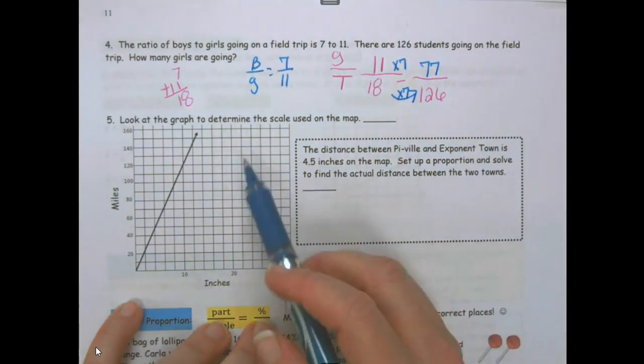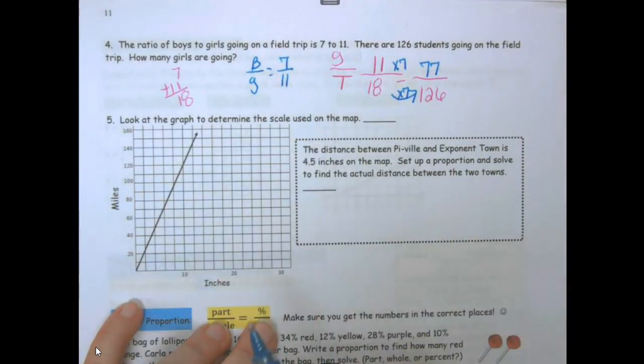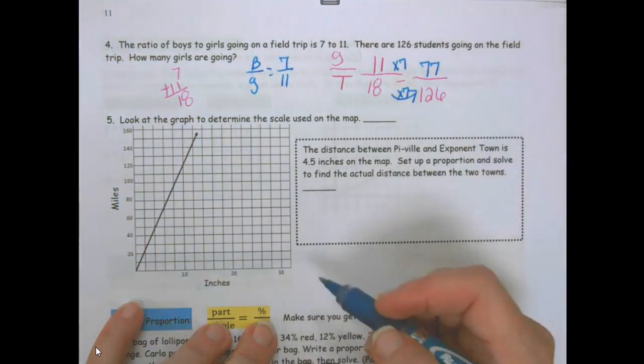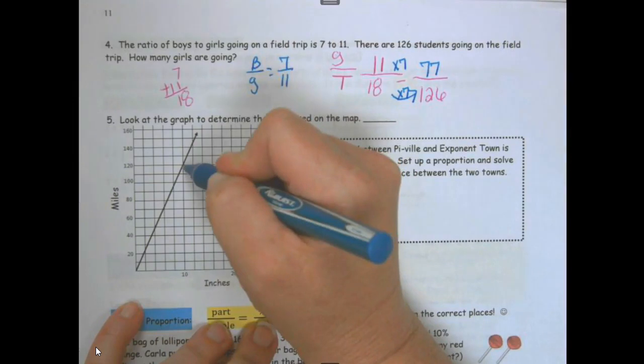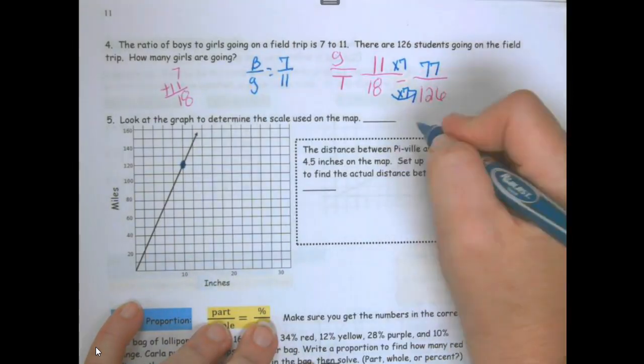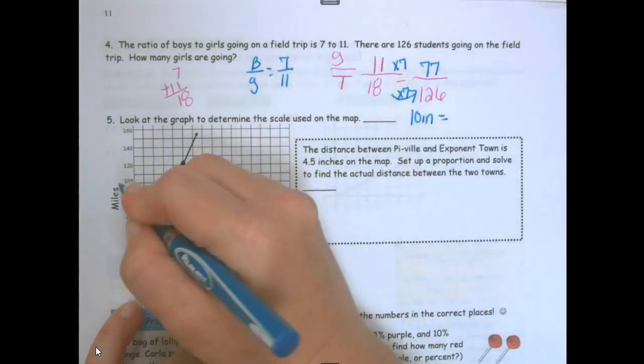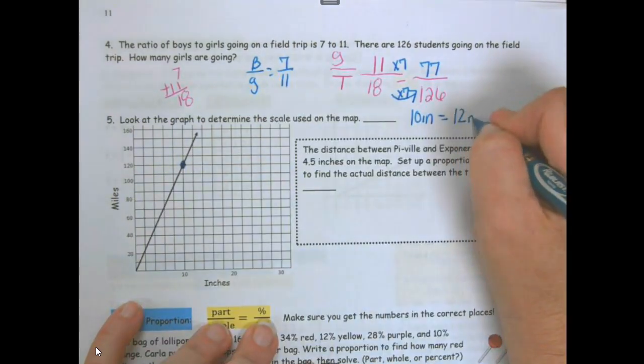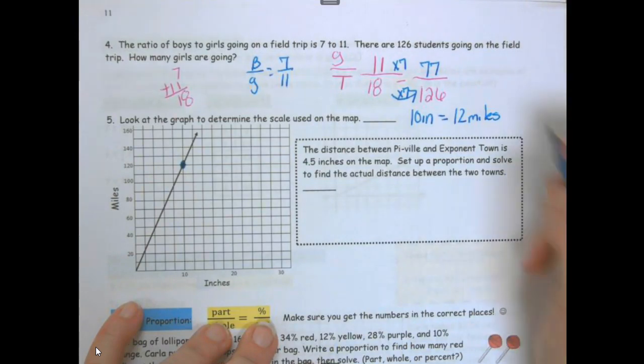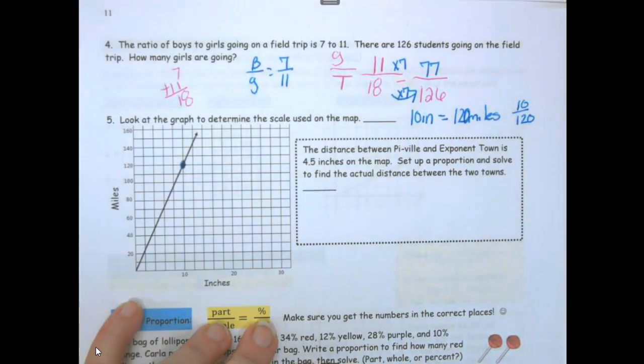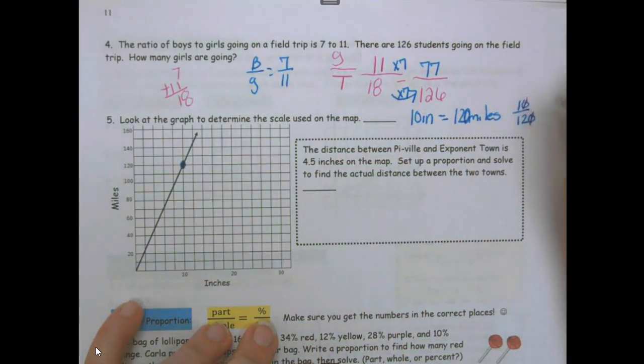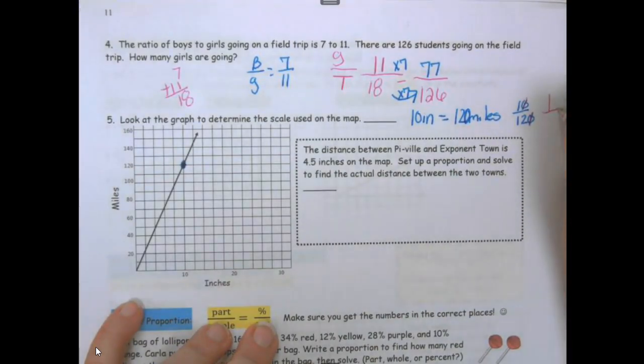Look at the graph to determine the scale used on the map. I'm going to find something where it crosses evenly. So 10 inches equals 120 miles. So it's 10 to 120. I can cross off the zeros. And I get 1 to 12.